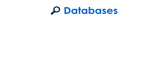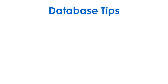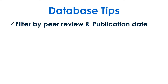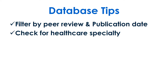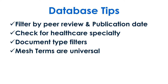Health Sciences databases are the other place to search. These work best for literature reviews, evidence-based practice, and PICO questions because they have healthcare-specific filters. When searching databases, filter your results by peer review and publication date, then check for options to filter by healthcare specialty or for specific types of evidence-based research studies if you need them. All databases will use MeSH terms, a medical vocabulary for libraries, so feel free to copy and paste them from database to database.